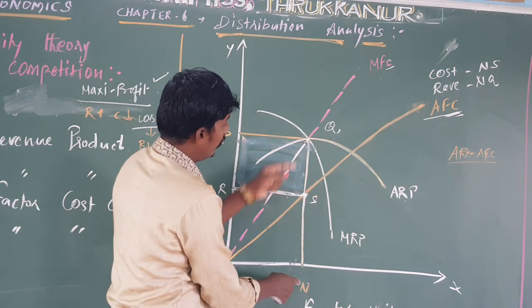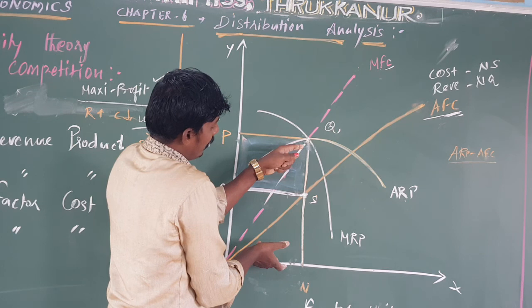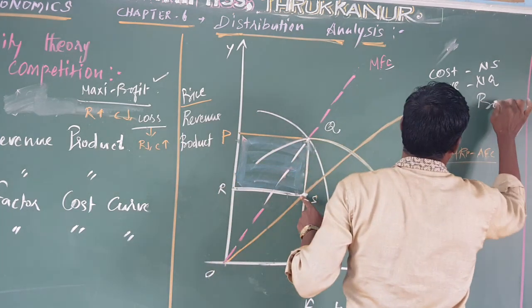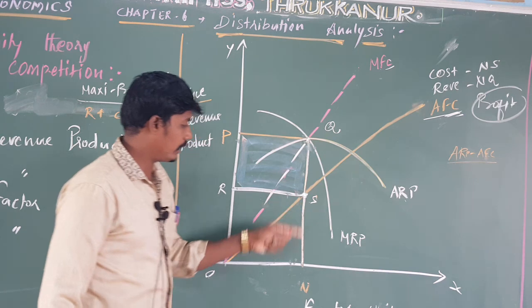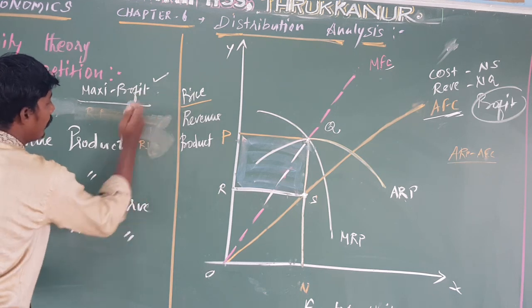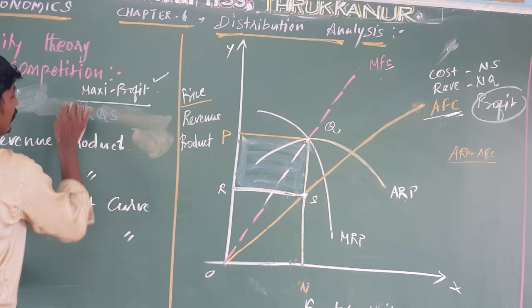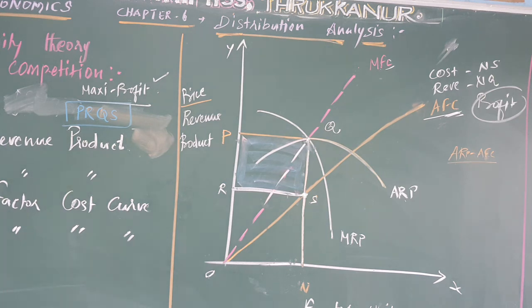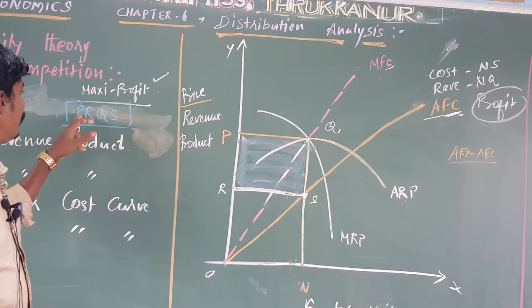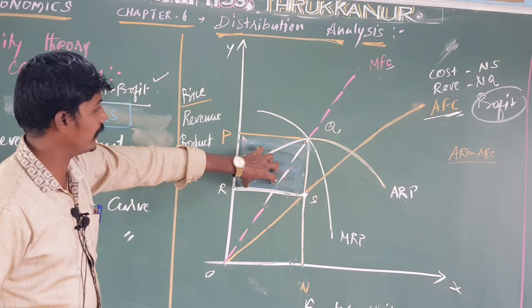The revenue is represented by Q and the cost is represented by N on the diagram. The shaded area PRQS represents the maximum profit. If the minimum profit equals maximum profit, the shaded area PRQS shows the profit region under imperfect competition.